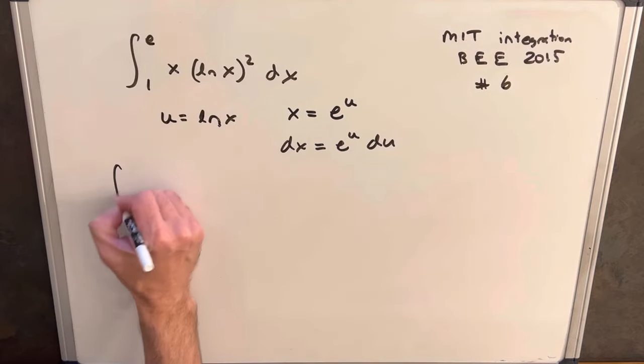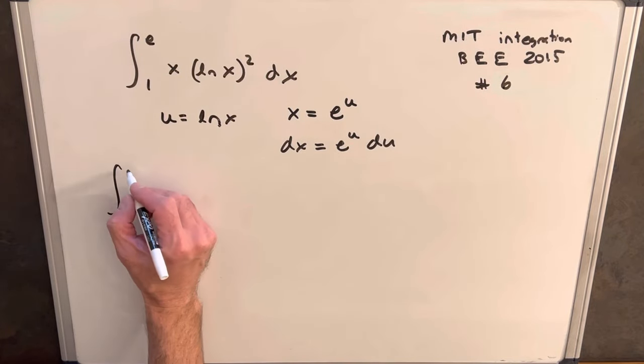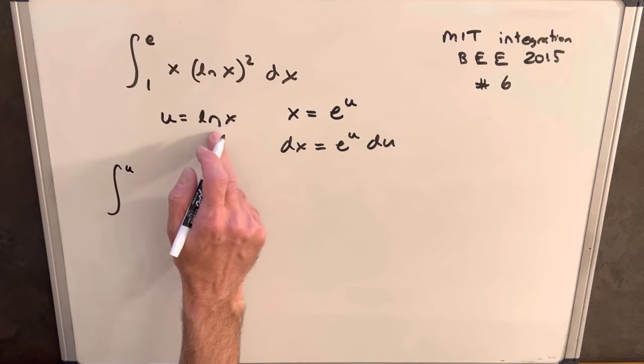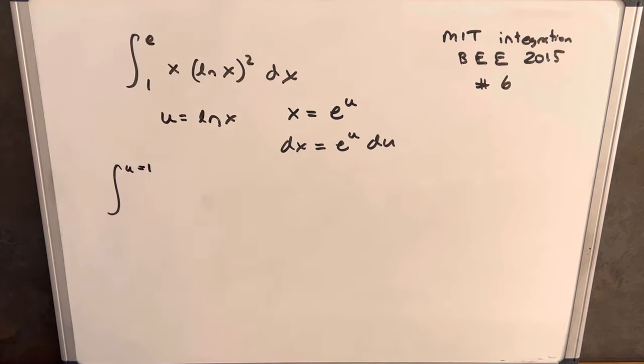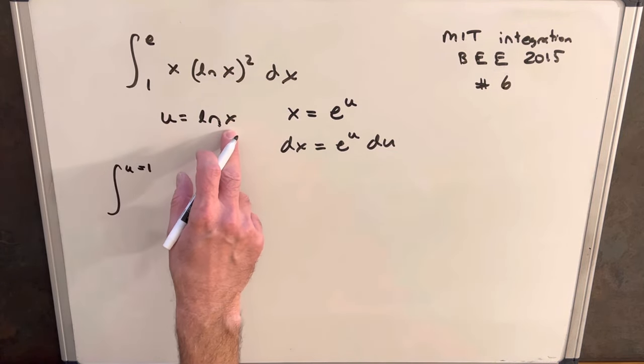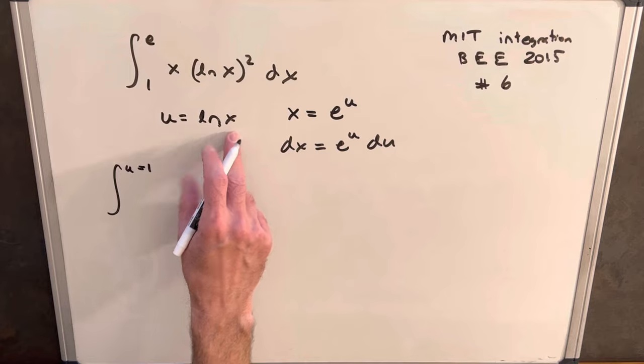Okay, we'll make our substitution. First, let's update our limits of integration. So if we plug e into ln x here, ln of e is just 1, so our top boundary is 1. And then we'll plug 1 in for ln x here.